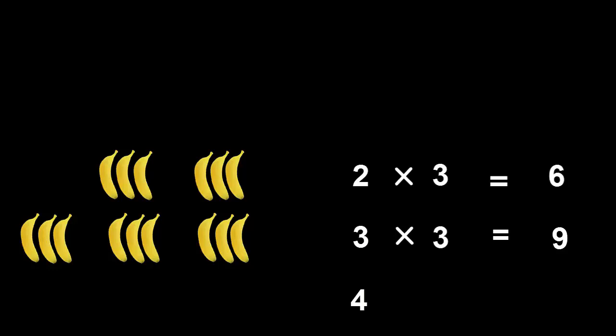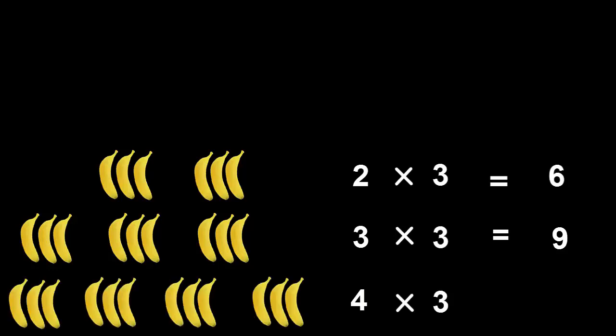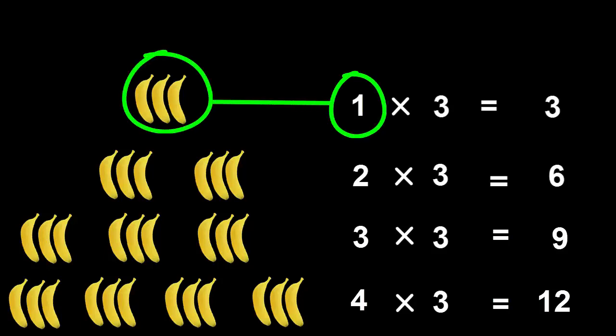Four multiplied by three means four lots of three. So one multiplied by three has to mean one lot with that lot containing three in it. This equals three.